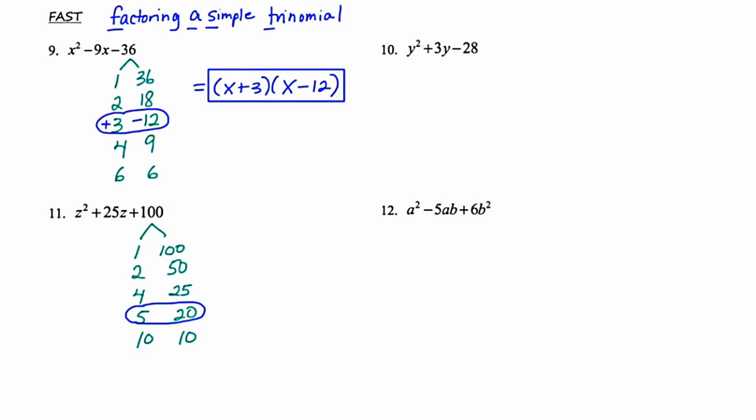Now I'm going to think about the positives and negatives. Because the constant is positive 100, both signs have to be the same. Because the middle term is positive, they both have to be positive. So I'm putting a plus in front of both 5 and 20. As a double check: multiplying gives 100, and adding gives 25. So this works. Setting up my winning binomials with variable z, the factored form is (z + 5)(z + 20). Again, you could FOIL to check.